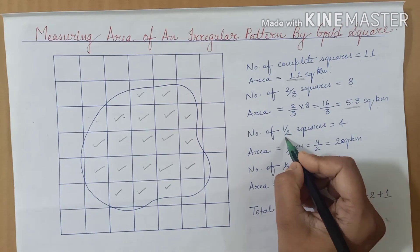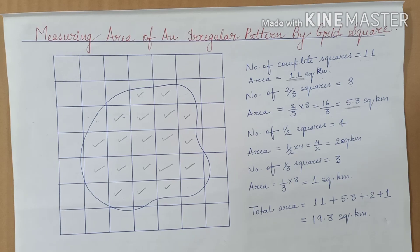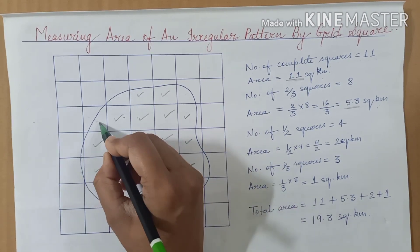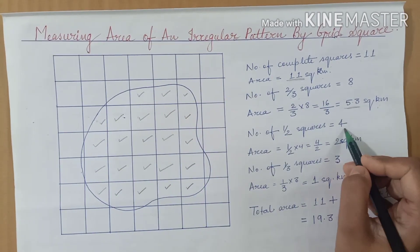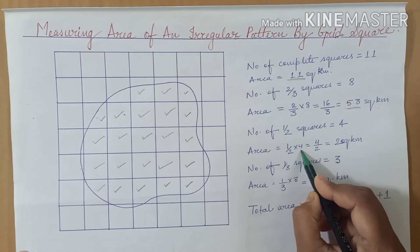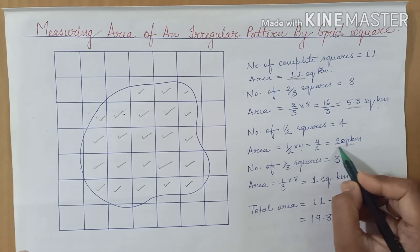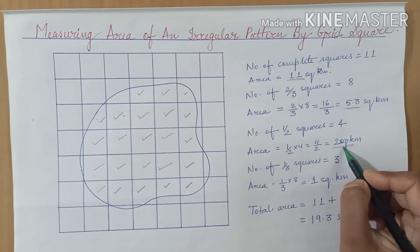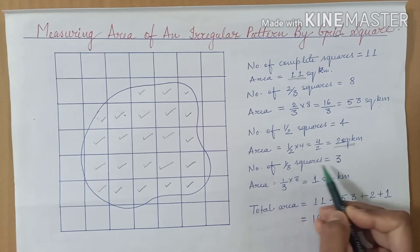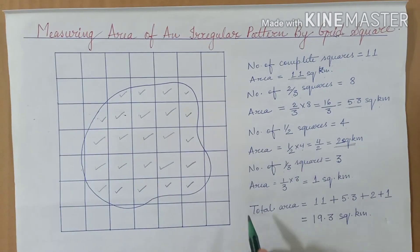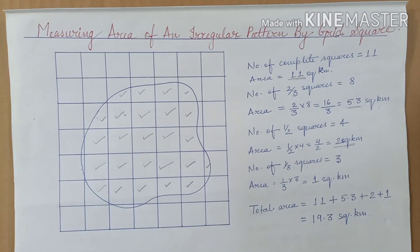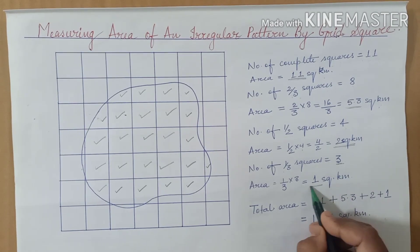Next, we count the squares that are approximately half of a complete square. There are 4 such half squares: 1, 2, 3, and 4. Multiplying half by 4 gives 2 square kilometers occupied by the half squares. Then we identify squares that are less than half — about one-third of a square. There are 3 such squares, giving an area of 1 square kilometer.